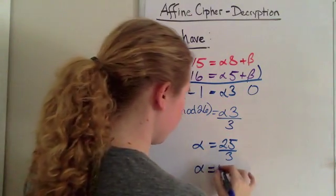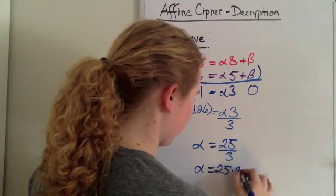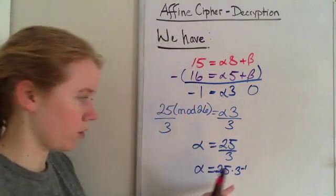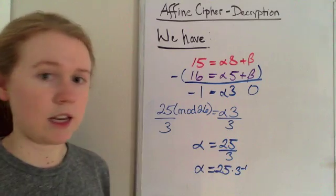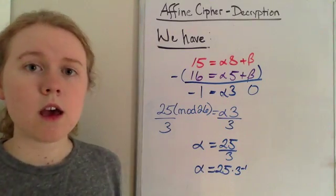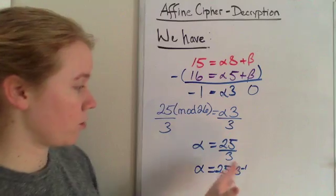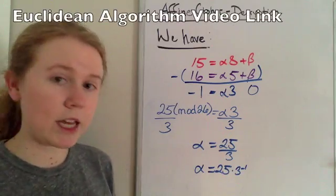We have to use 25 times the inverse of 3, which is the same thing. Now in order to find out what the inverse of 3 is, and it is not 0.33, we have to use the Euclidean algorithm.